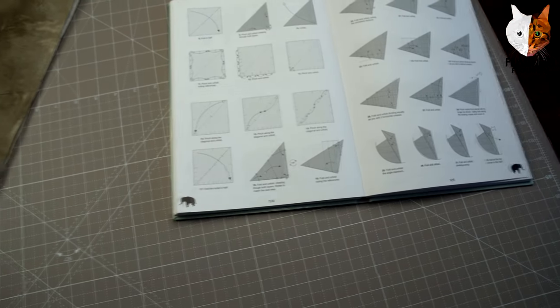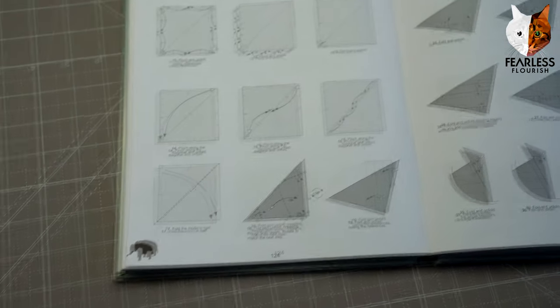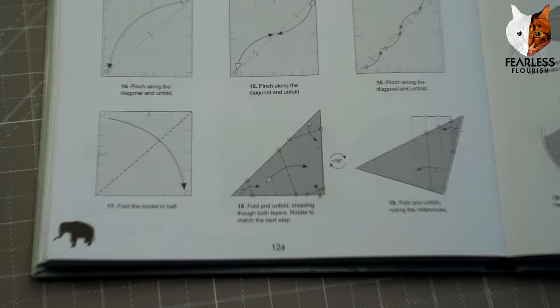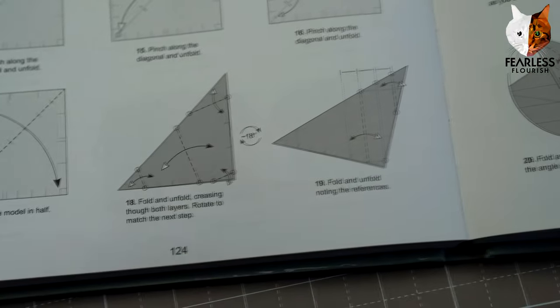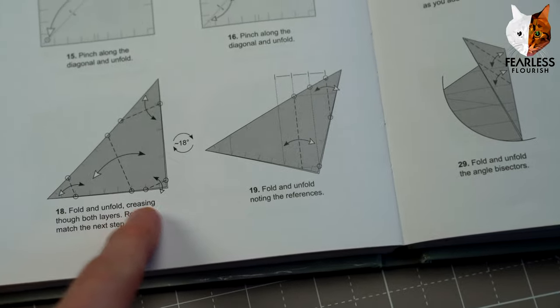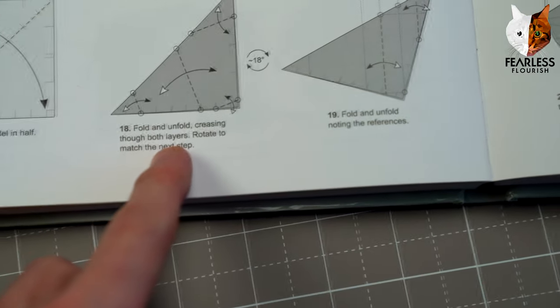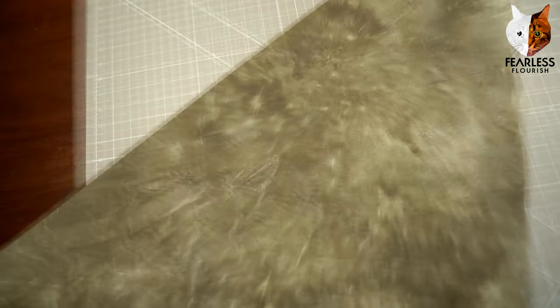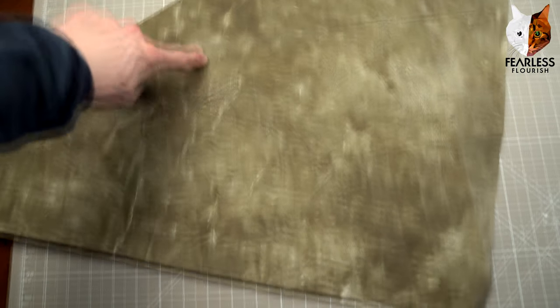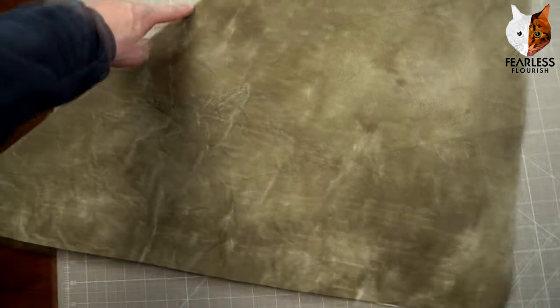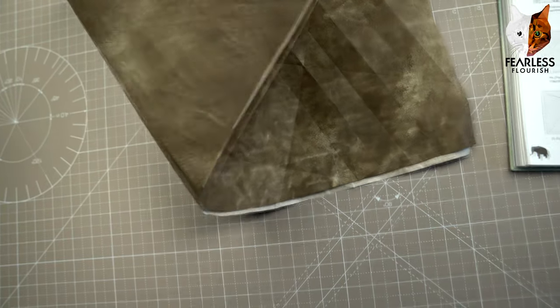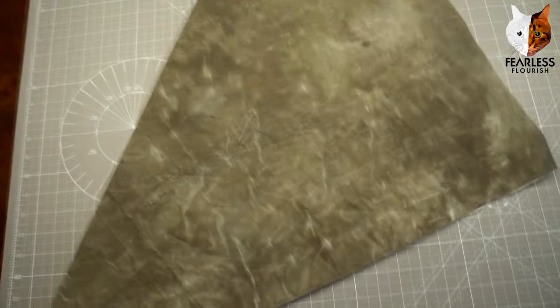Tip number three is one of the most important ones you should always try and remember to do. Shuki always tells you to crease through both layers, so both layers at once. Let's just say this angle here, I need to make a crease from here to here. I've got the reference here and the reference here. Then I'll just fold over through both layers.